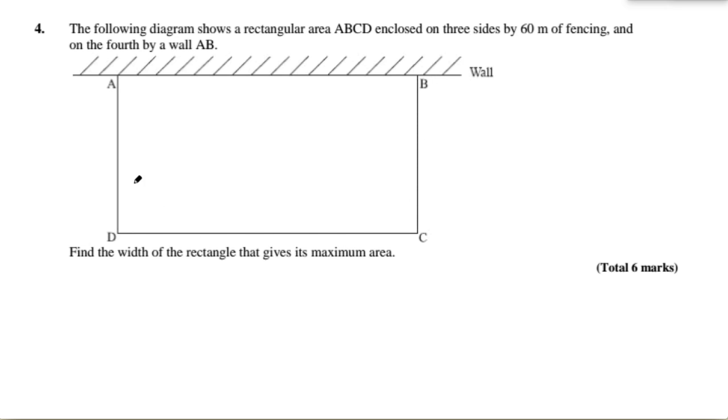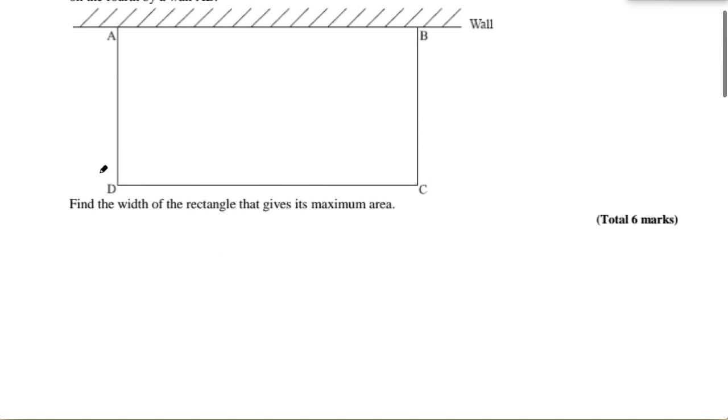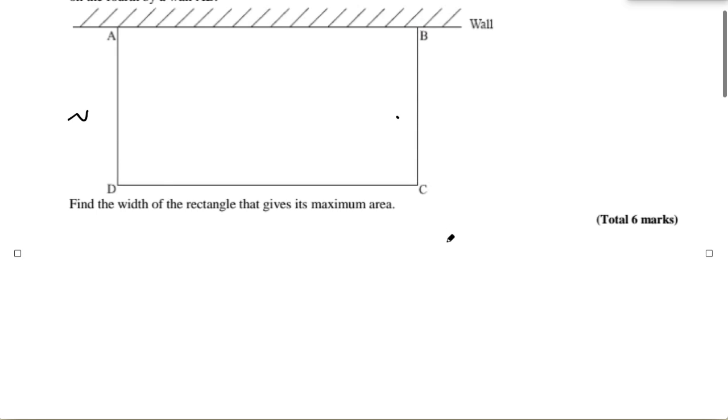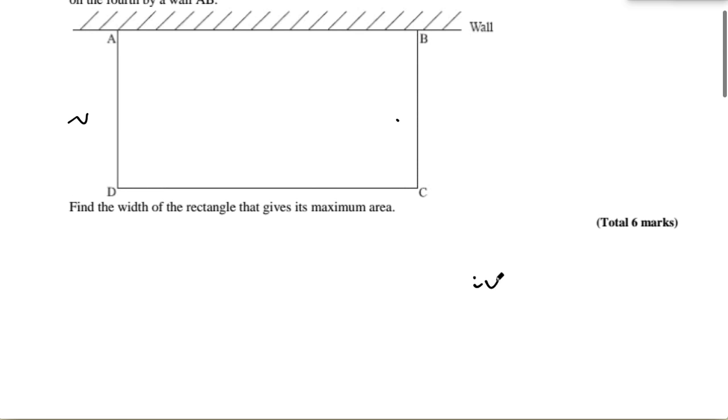of these three sides equals 60. So if you go, let's say these are w, w, and L, so just pretend that's that. You know that the equation for all these three sides becomes 2w + L = 60, because that's what they give you as